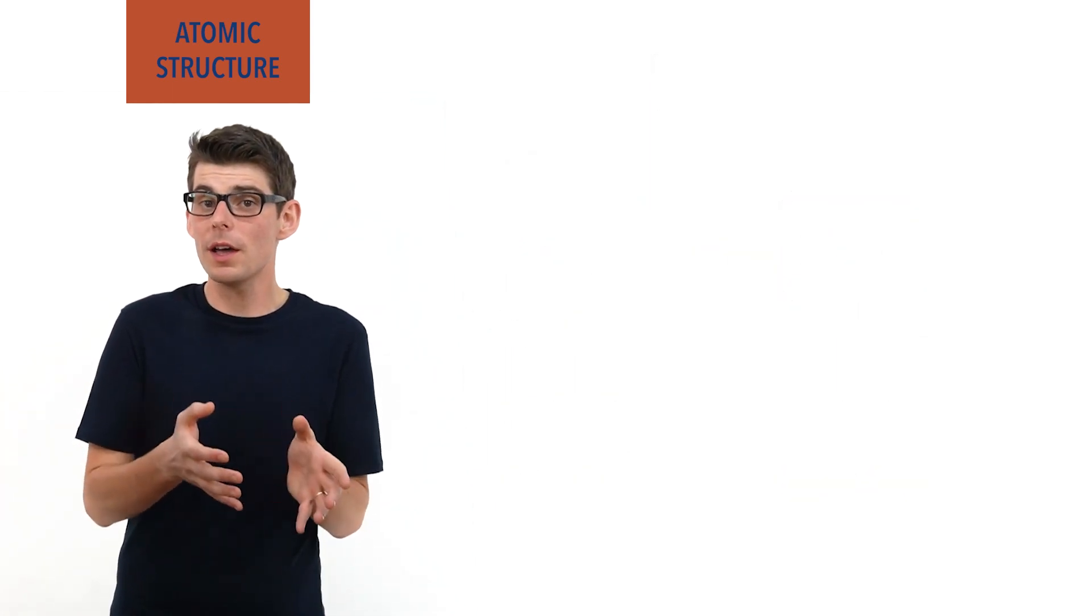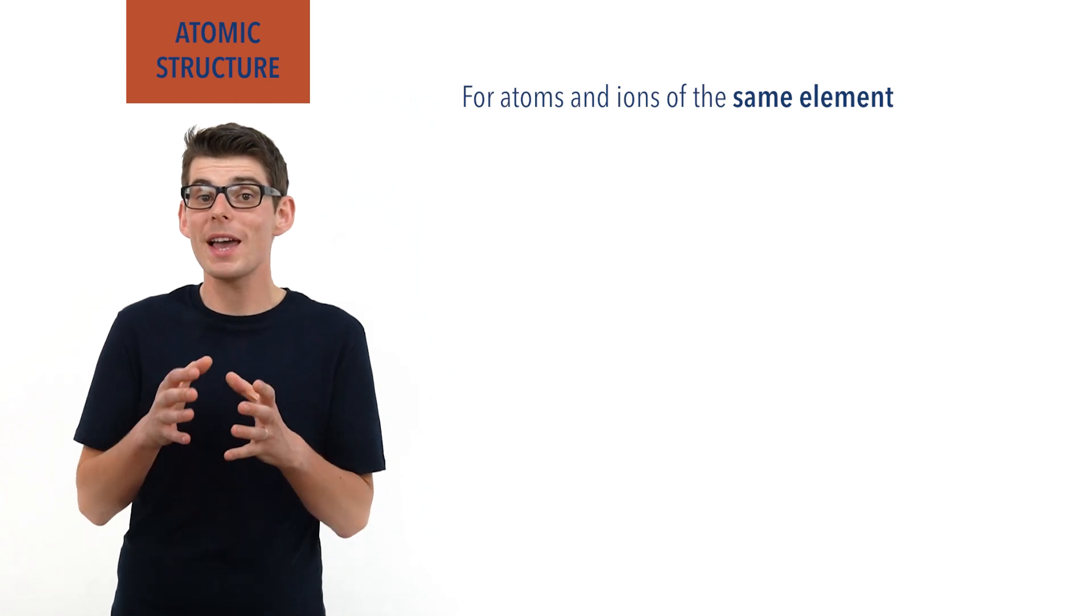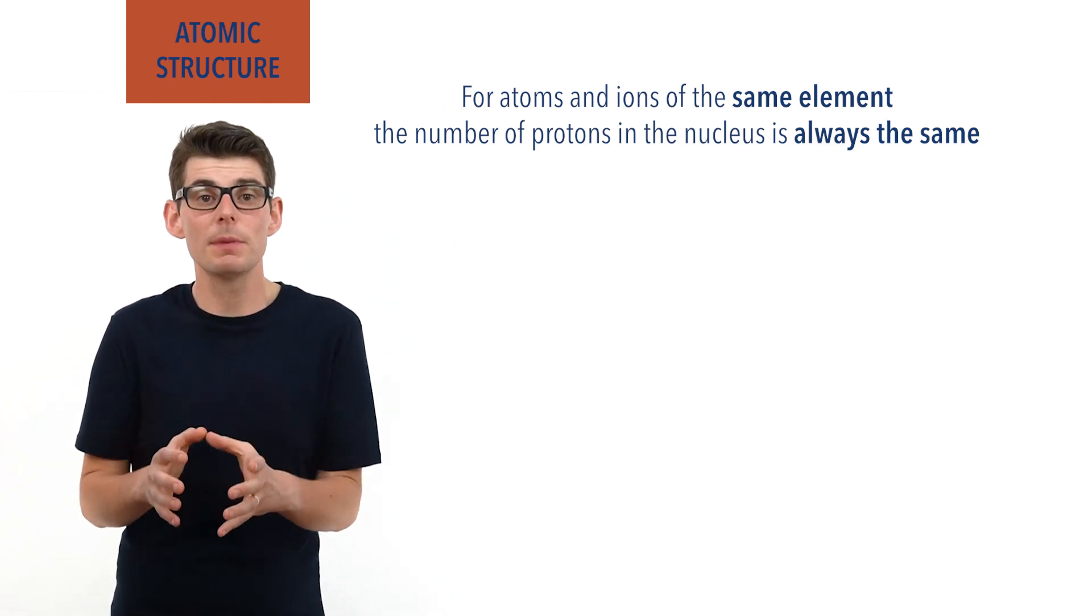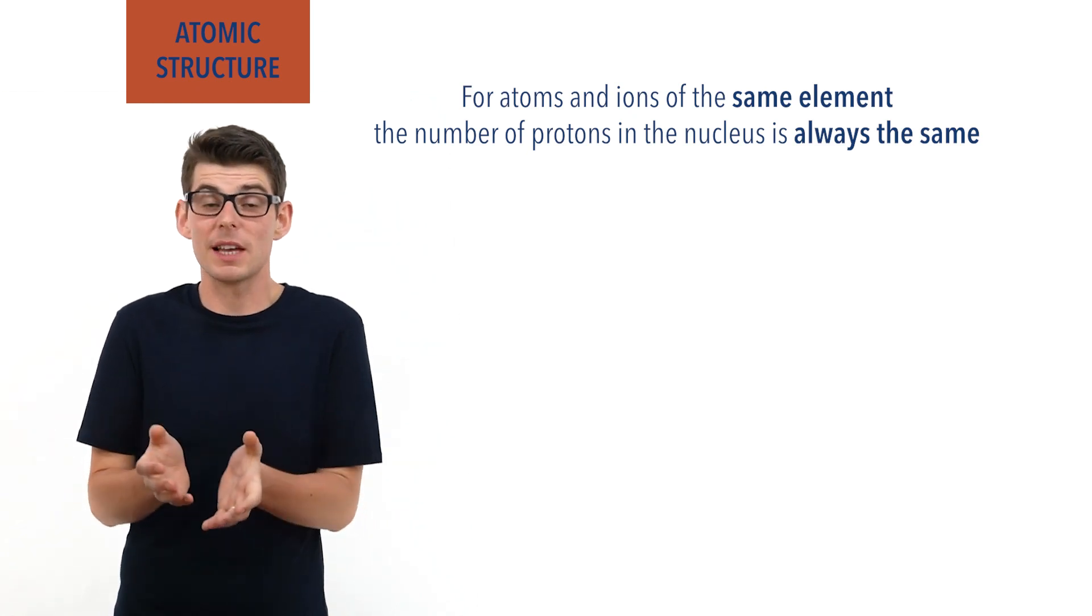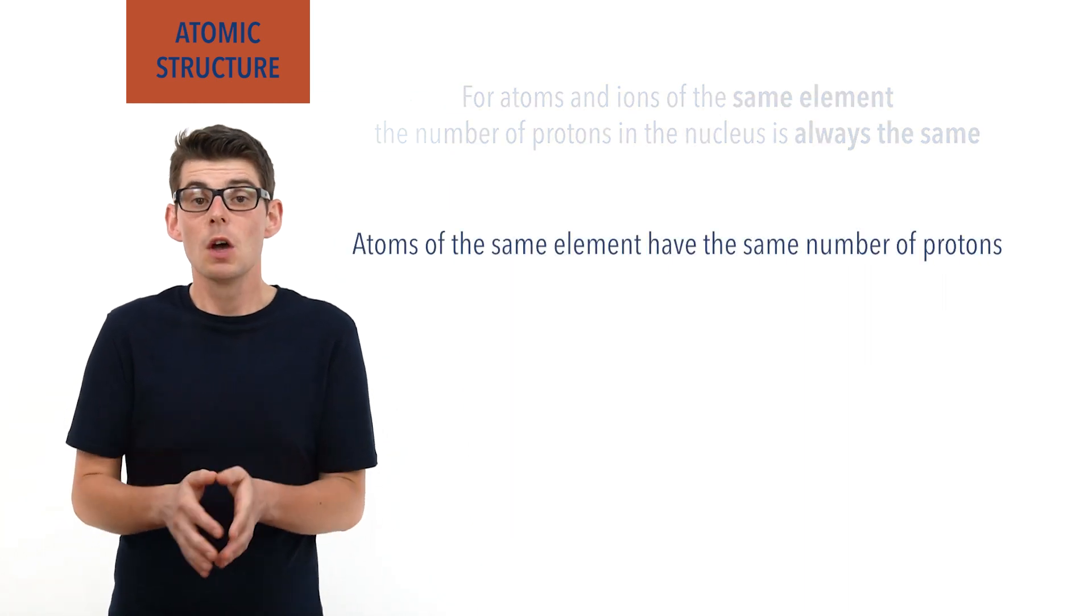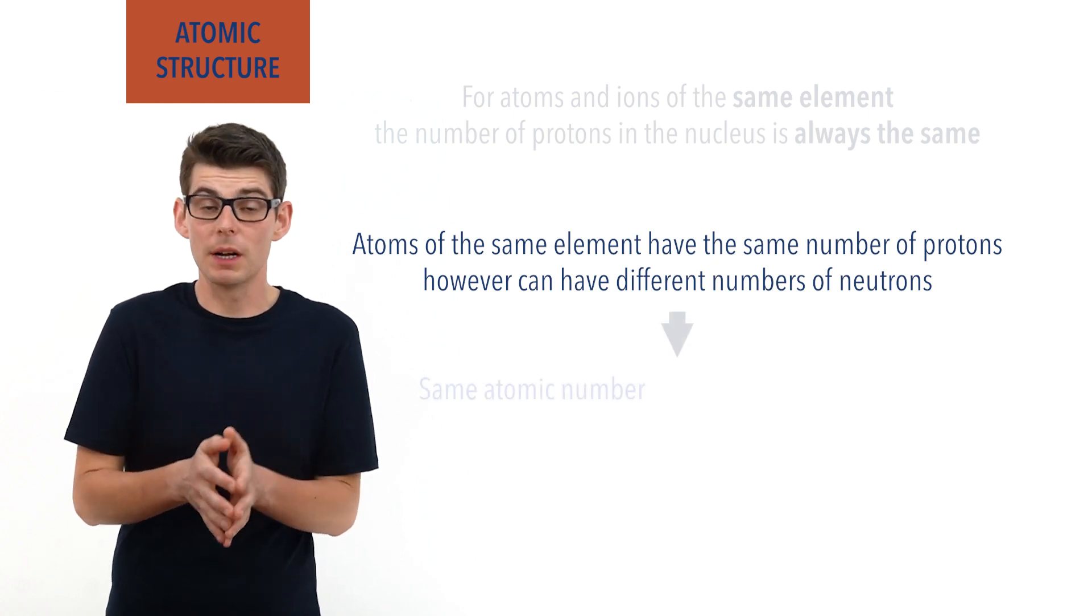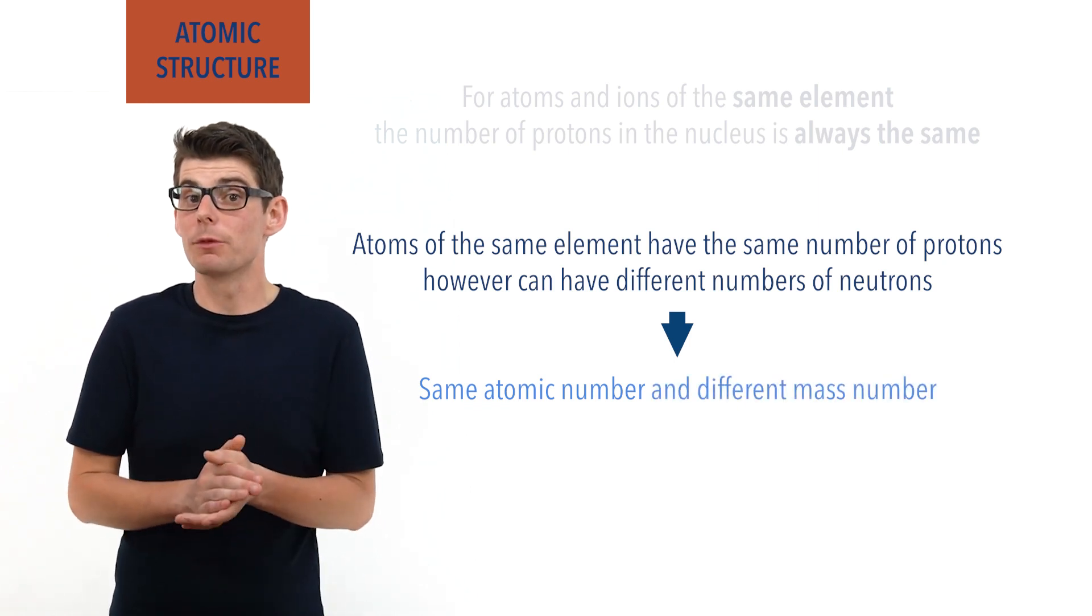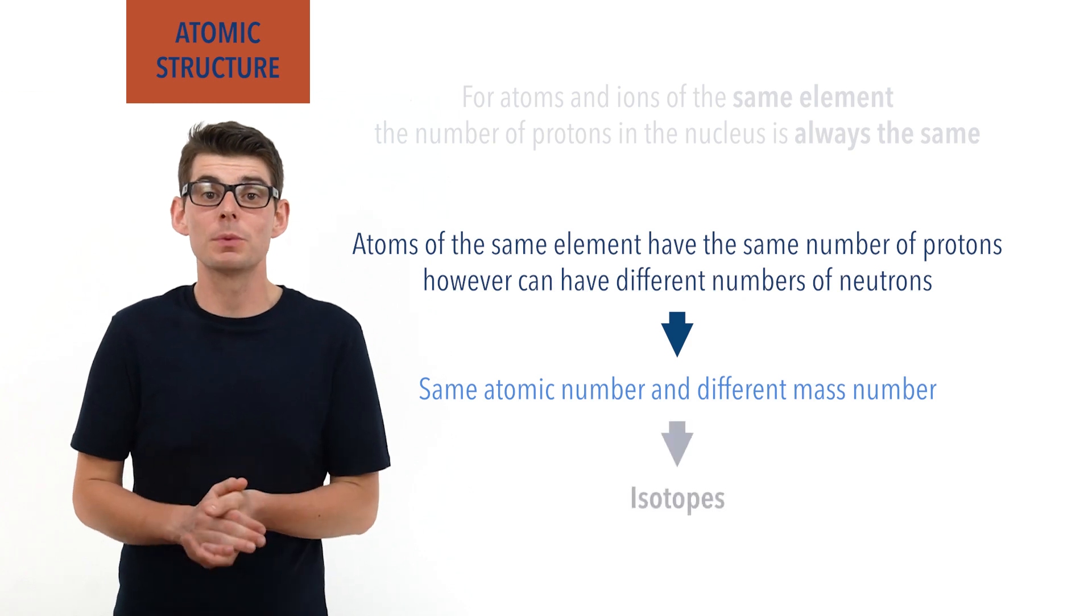Whether in an atom or an ion, however, the number of protons inside the nucleus is always the same for a given element. This is important as the type of atom or element is determined by the number of protons it has in its nucleus. Because of this, as strange as it may seem, atoms can have the same number of protons and be the same element, whilst having different numbers of neutrons. This means that they would have the same atomic number, number of protons, and a different mass number, combined number of protons and neutrons. Such atoms are described as isotopes of an element.